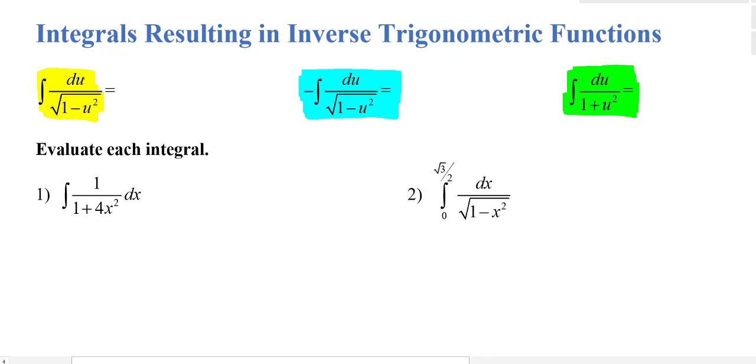So the antiderivative of du over the square root of 1 minus u squared. Think to yourself what function gave you that as its derivative? And if you thought about it and answered inverse sine you are correct. So this antiderivative is inverse sine of u plus c. Don't forget your plus c.